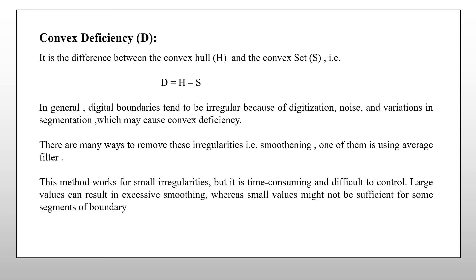And the solution is smooth a boundary prior to partition by traversing the boundary and replacing the coordinates of each pixel by the averaging coordinates of K of its neighbors along the boundary. This works well for smaller irregularities but it is very time-consuming and difficult to control and there may be excessive smoothing due to this in case of large values of K and it may be insufficient in some segments of the boundary due to small values of K.